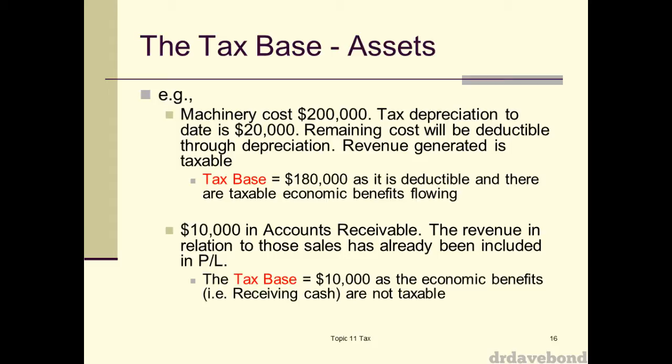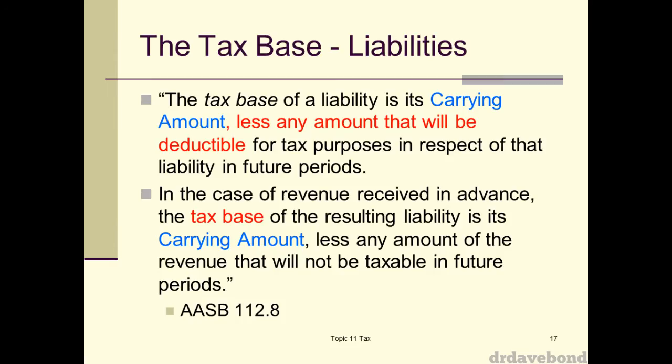The really neat thing about the standard is that paragraph 7 and paragraph 8 actually include examples of about five situations each, showing what the carrying value and the tax base is — they give you some guidance on what you should do. The tax base of a liability is the carrying amount less any amount that would be deductible for tax purposes in respect of that future period.